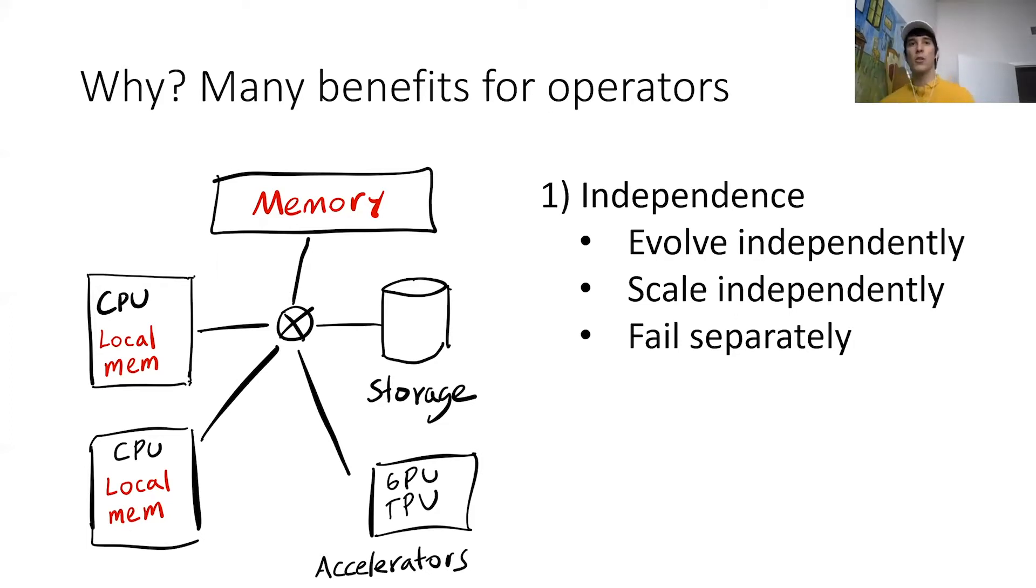Furthermore, you can also scale resources independently. If you happen to need more memory, just add more memory blades or add more memory chips to a memory blade. And failures can also happen separately—there are situations in which a memory node can fail but the CPU node might still be okay, or vice versa.